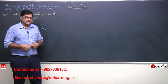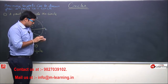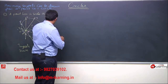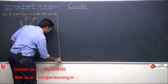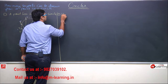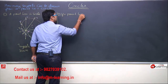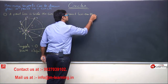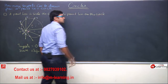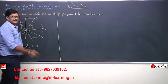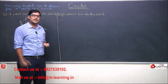Is se mujhe lagta hai ki secant aur tangent ke beech ka ek difference aur achhe se samajh mein aaya. Secant kya hai? Do points pe cut karna chahiye. Tangent sirf ek point pe cut karna chahiye. Ye toh pahli position thi point ki — inside the circle. Second position: if a point lies on the circle.